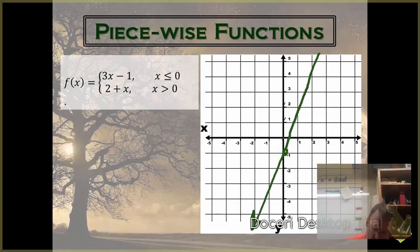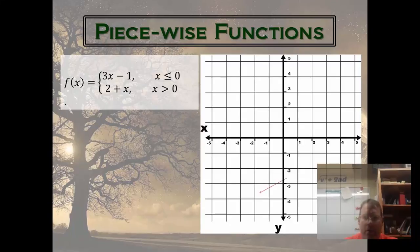However, I have no need for any of this stuff here, simply because the graph only wants 3x minus 1 for the negative values. Okay, so ultimately, that part of the graph is going to look like that.